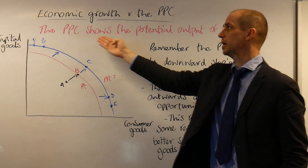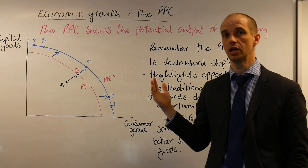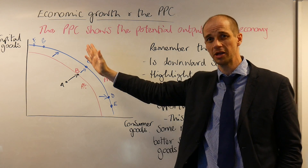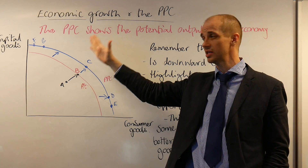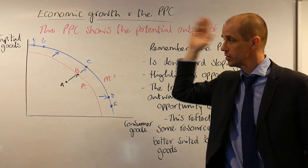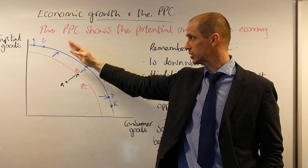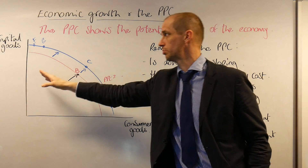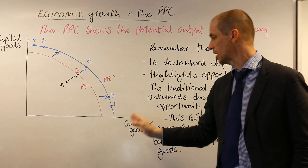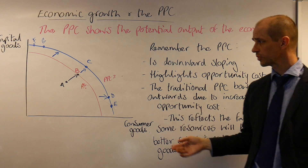The PPC shows the potential output of the economy, and importantly, it shows that the economy must make a choice between how much should be produced in terms of capital goods and how much should be produced in terms of consumer goods.